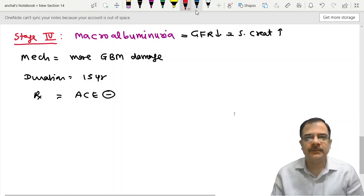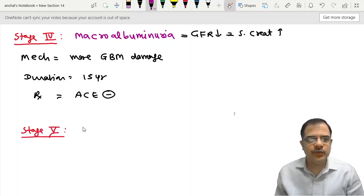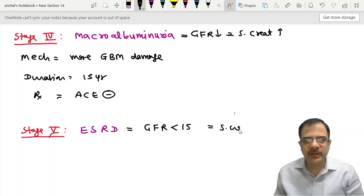Stage 5 is known as end-stage renal disease. Here, the GFR value is less than 15 ml per minute per 1.73 meter square area. And of course, serum creatinine is grossly high here.